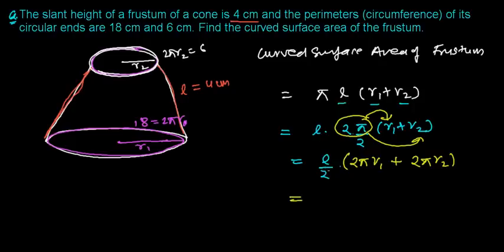And now let's plug in all the values. The length we have got is 4 centimeters slant length, or you can say the slanted height, 4 by 2 times. Now 2πr1, we have already got 2πr1 that is 18 centimeters, and 2πr2 we have already got, that is 6.